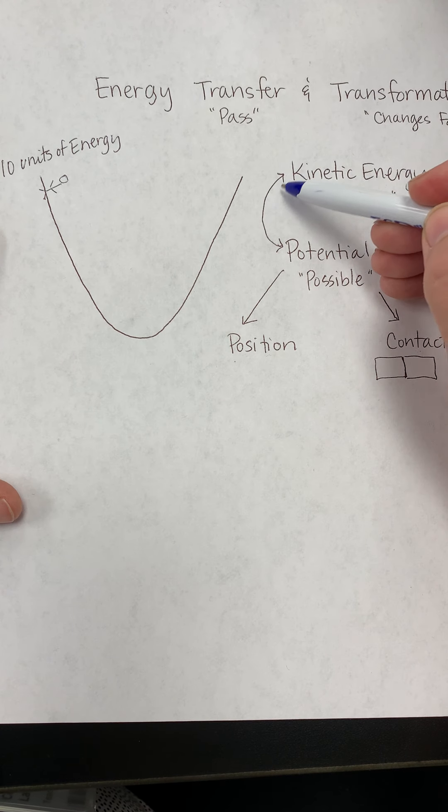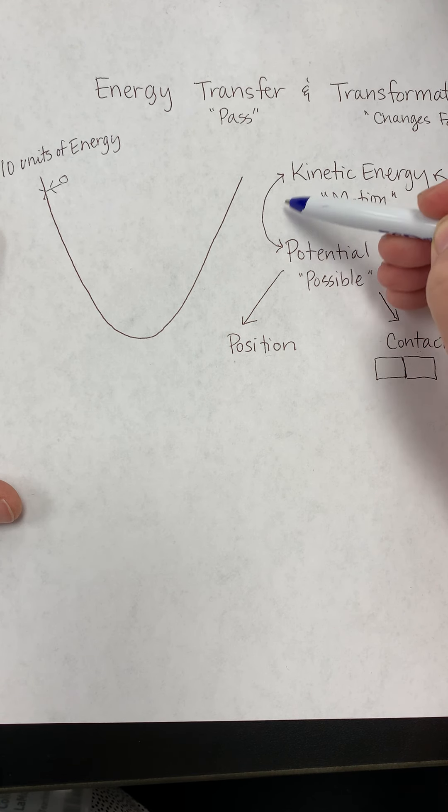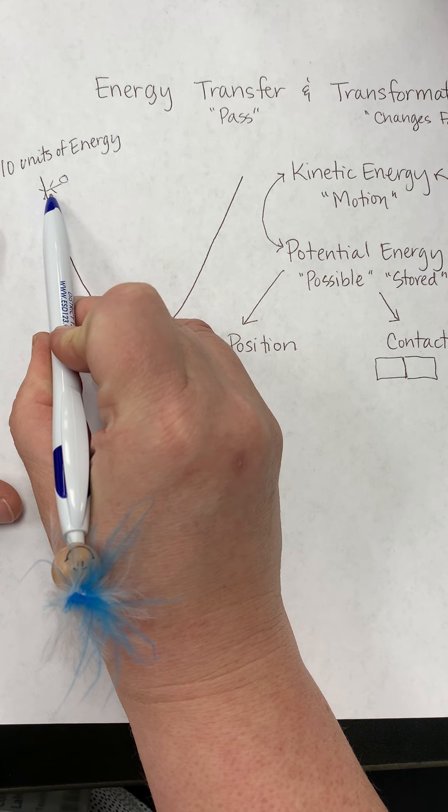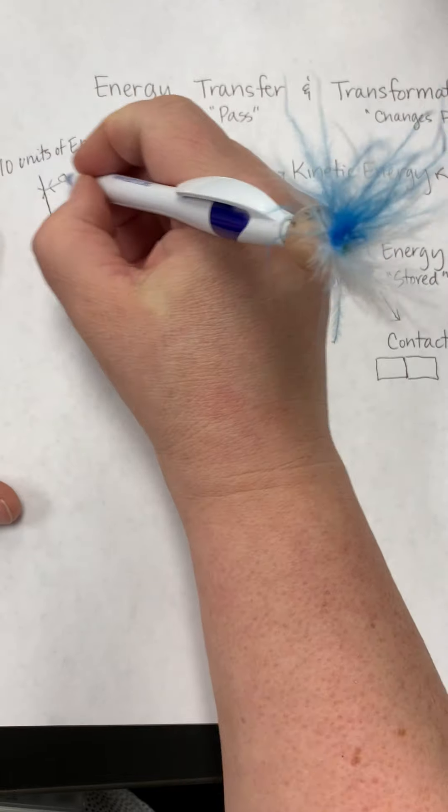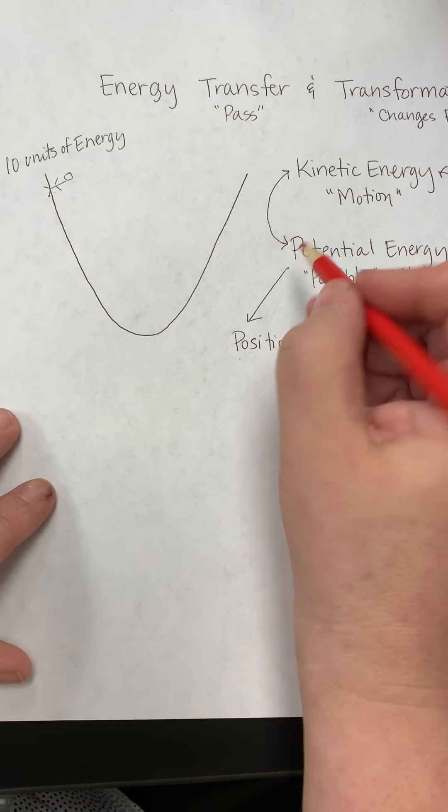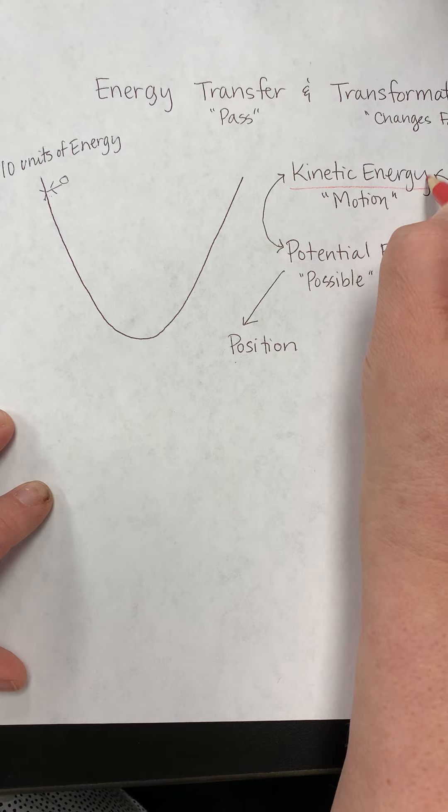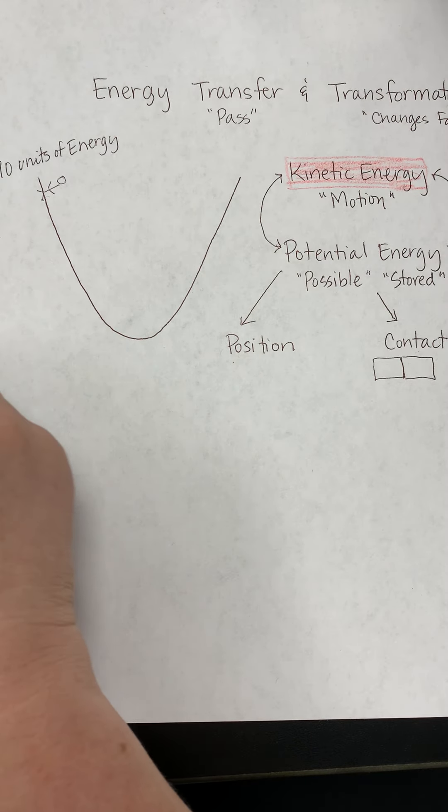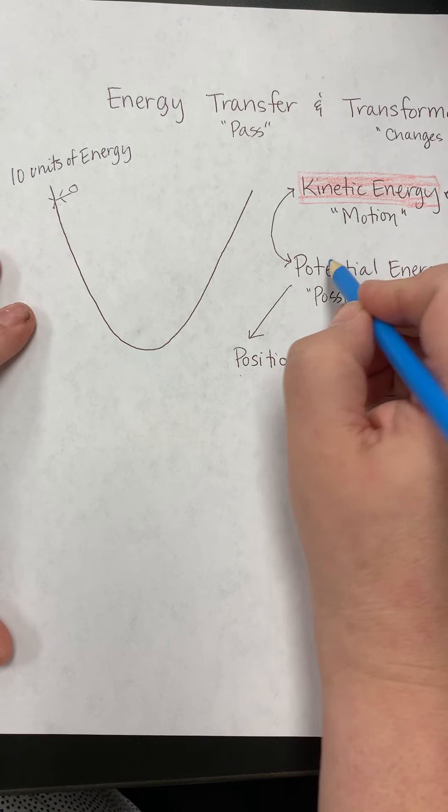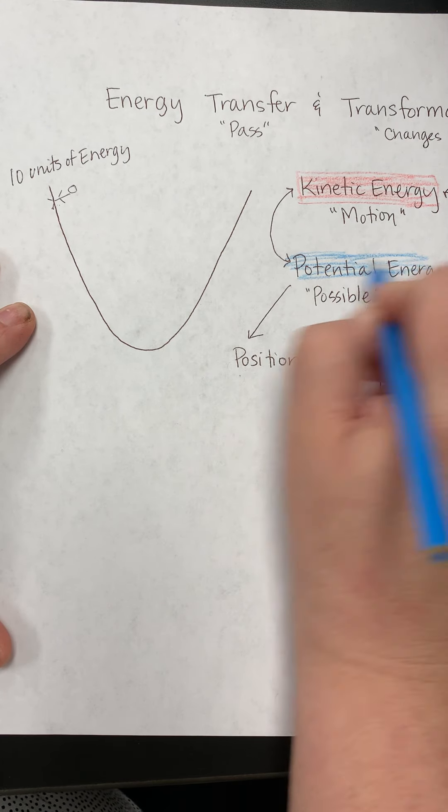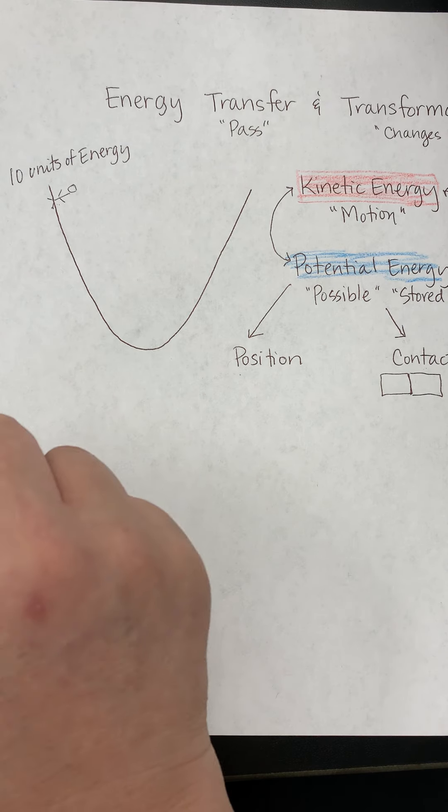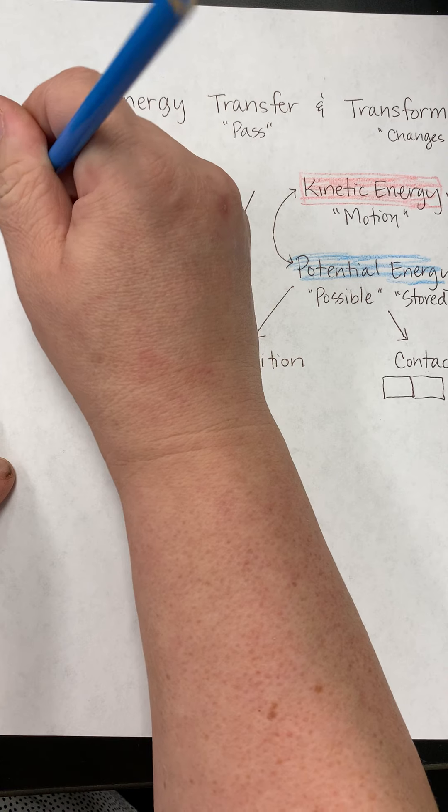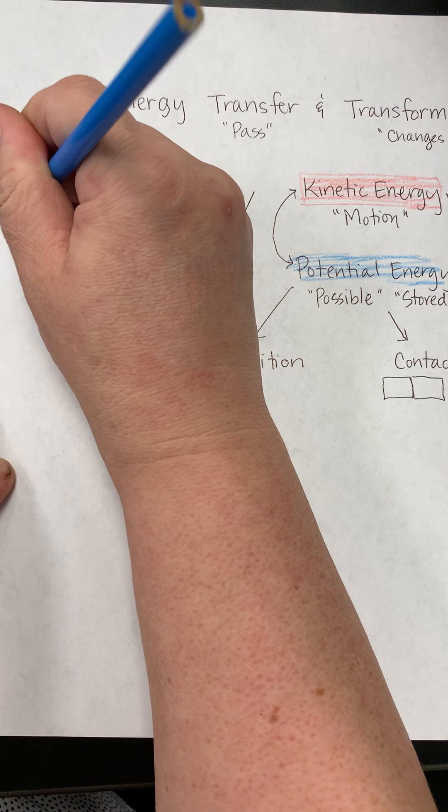If we know that energy is constantly transforming between kinetic and potential, at this moment, before the skateboarder is moving, all of the energy is potential. So, I'll do kinetic as red, and I'll do potential as blue. Okay, so, at this moment in time, all of the energy is potential.